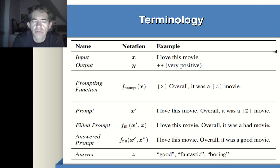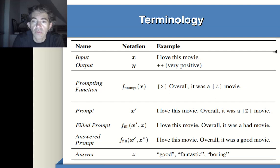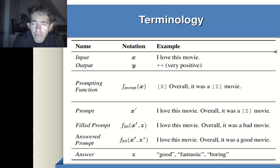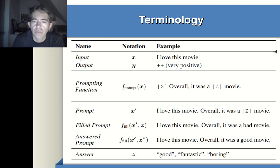For example, if I have a prompting function creating the string 'placeholder, overall it was a placeholder movie,' and I apply it to 'I love this movie,' I get the prompt: 'I love this movie. Overall it was a Z movie.' I send this to the large language model. If the model was trained with a masked language objective, it can predict the most probable word to fill placeholder Z. The filled prompt is the prompt with any answer from the language model — for instance, 'I love this movie. Overall it was a bad movie' or '...a good movie.'